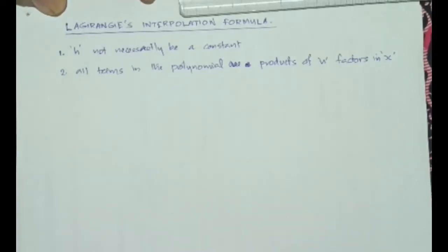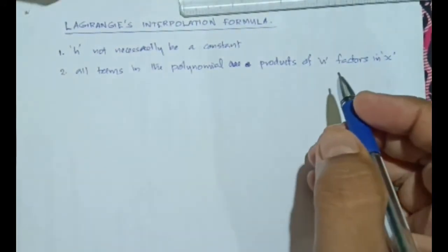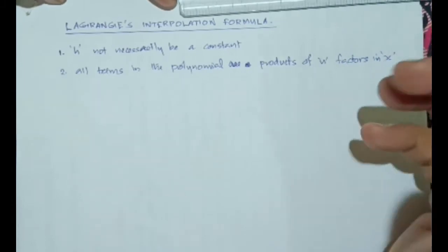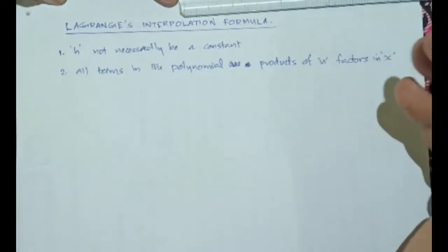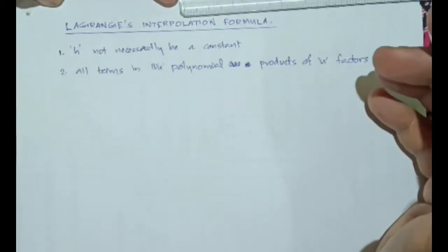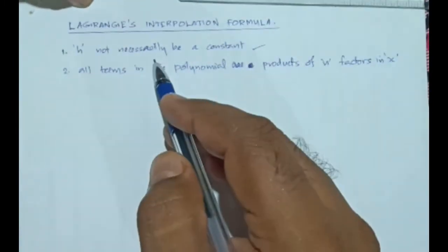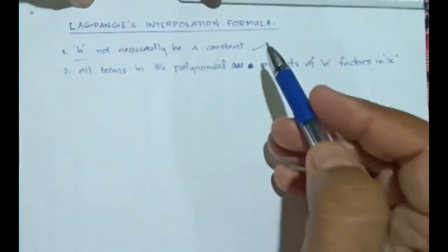Hello. In the last sessions we were discussing about Newton's forward interpolation formula and Newton's backward interpolation formula. These formulae were used when the interval of differencing of the independent variable x was a constant. There are situations where the interval of differencing is not a constant, and in those situations we will resort to some other methods for interpolation. Such a formula is called Lagrange's interpolation formula, in which the interval of differencing x need not be a constant.